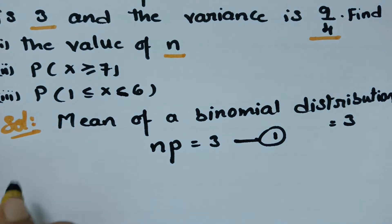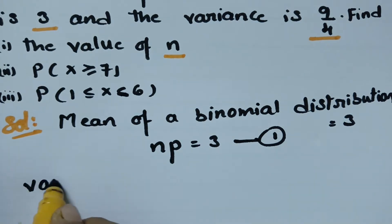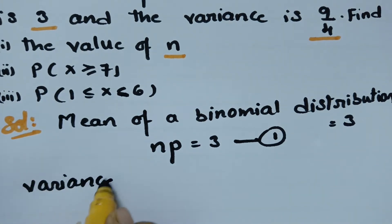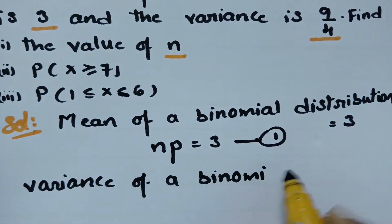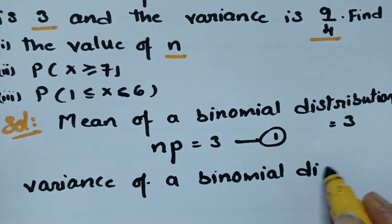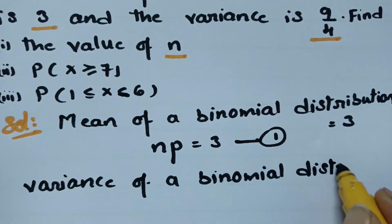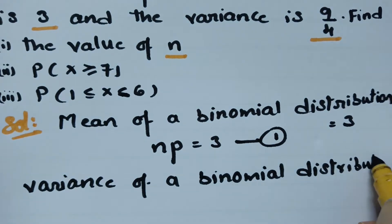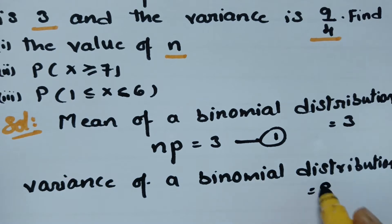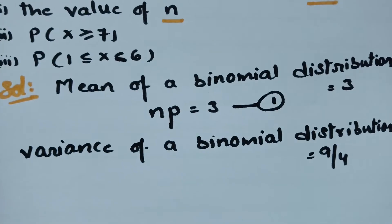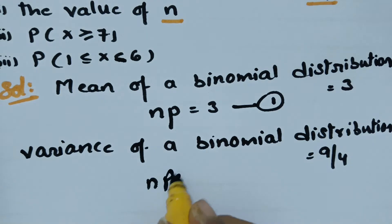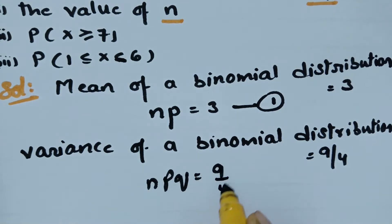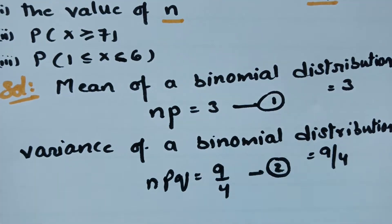Variance of a binomial distribution is 9 by 4. Variance is equal to npq. So npq is equal to 9 by 4. This is equation number 2.